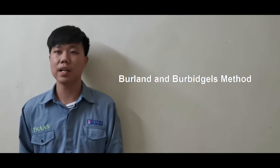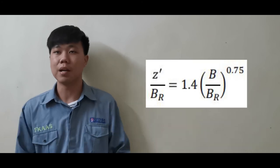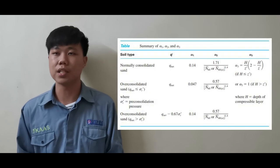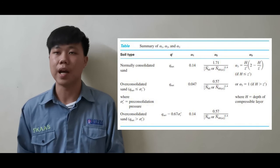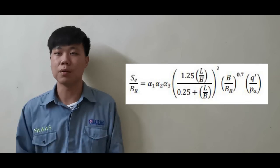For our settlement calculation, we are using the Burland and Burbidge method. There are two equations for calculating the settlement. First is the equation to find Z prime. We consider our soil to be normally consolidated. By referring to Table 7.7, we can obtain the unknown values: Q prime, alpha 1, alpha 2, and alpha 3. After obtaining all these unknowns, we substitute them into the second equation to find the settlement.